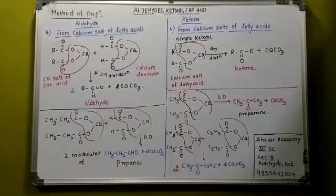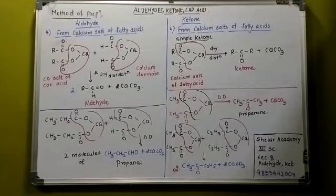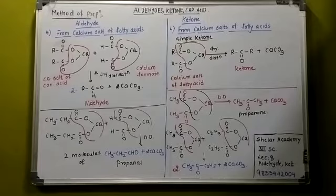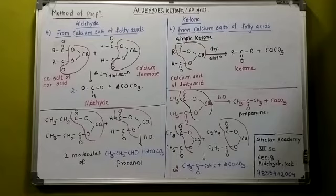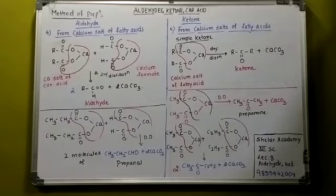Next method of preparation, lecture number 8, is from the calcium salt of fatty acid. First of all, carboxylic acid is RCOOH, sodium salt is RCOONa - H is replaced by sodium because its valence is 1. What would be calcium salt of fatty acids? Its formula would be (RCO2)2Ca, that is the calcium salt of fatty acid.